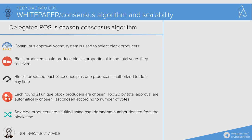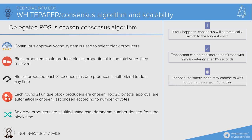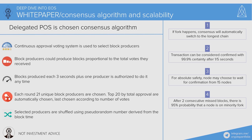Here are five important facts to remember about delegated Proof of Stake. If a fork happens, consensus will automatically switch to the longest chain. A transaction can be considered confirmed with 99.9% certainty after one-fifth of a second. For absolute safety, a node may choose to wait for confirmation from 50 nodes. After two consecutive missed blocks, there is a 95% probability that a node is on a minority fork. Every transaction includes the hash of a recent block header to prevent replay attacks.